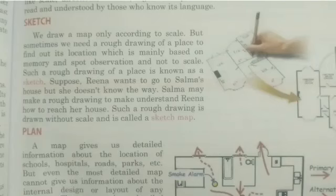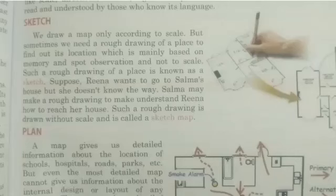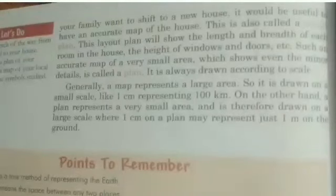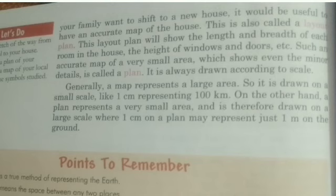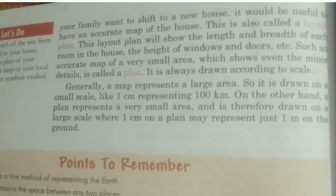A map gives us detailed information about the location of schools, hospitals, roads, parks, etc. But even the most detailed map cannot give us information about the internal design or layout of any building — for that we require a detailed drawing to scale, which is known as a plan. A plan is a drawing of a small area on a large scale. A map generally represents a large area drawn on a small scale, like 1 cm representing 100 km. A plan represents a very small area drawn on a large scale, where 1 cm on the plan may represent just 1 meter on the ground.